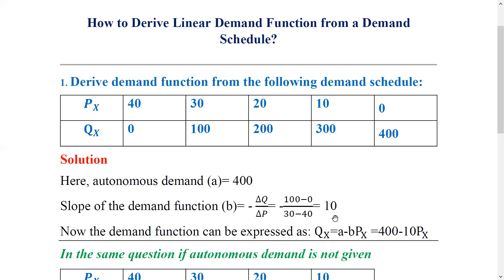So QX equals A minus BPX is the standard form of the linear demand function. Therefore, QX equals 400 minus 10PX is the derived linear demand function for this simple case.